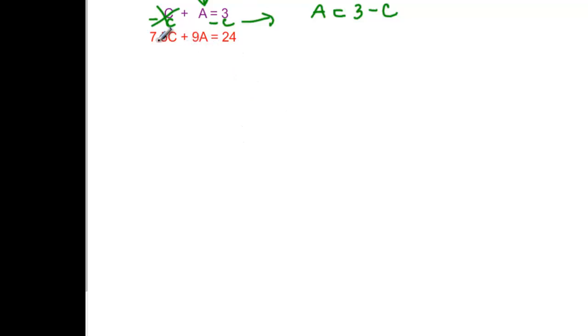So rewriting this bottom equation, then, for substitution, I have 7.5, I dropped the 0, it's the same thing as 7.50, plus 9, but now instead of A, I'm going to write 3 minus C, and then that's equal to our 24. Alright, doing our work then, 7.5C plus, and then we're going to distribute here, and we're going to get 27, and distribute here and get minus 9C equal to our 24.